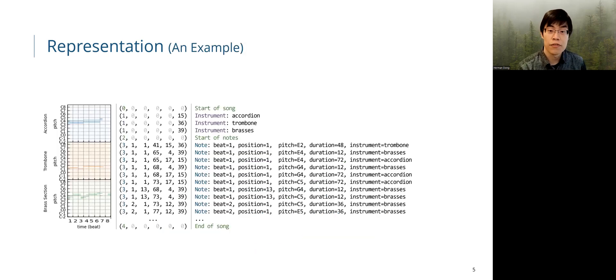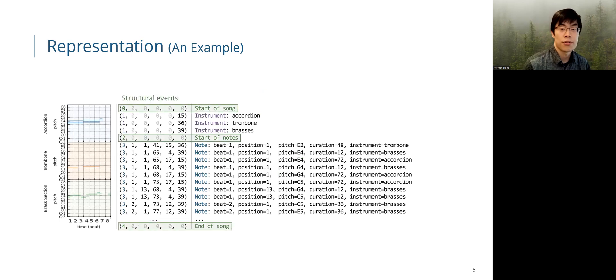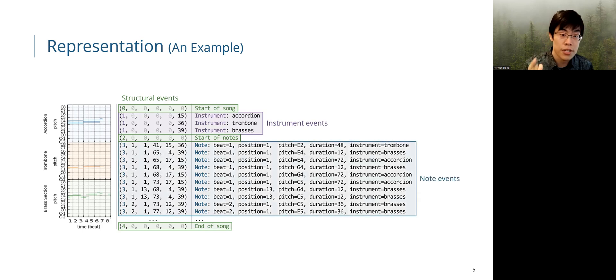Here's an example of a song encoded by our proposed representation. First, we have the structural events. Between the start of song and start of note events, we have a list of instrument events, which specifies all the instruments used in this song. After the start of note event, we have a list of note events, which encodes the music itself.